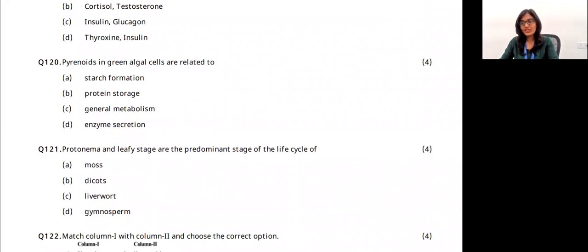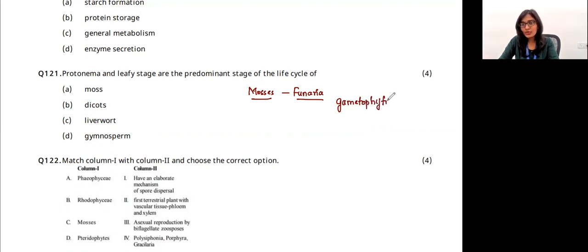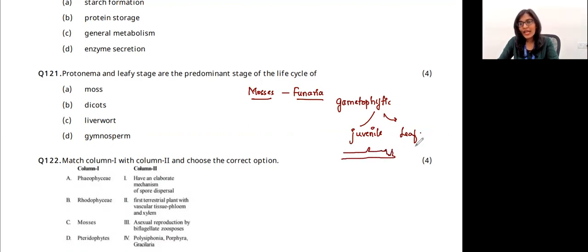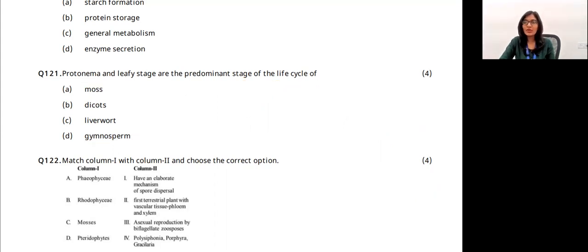Protonema and leafy stage are found in which organisms? In mosses like Funaria, the dominant phase is the gametophytic phase, which has two stages: a juvenile (protonema) stage and a leafy stage. The leafy stage has root-like, leaf-like, and stem-like appearances, but they are not real roots. This predominant gametophytic (haploid) stage is seen only in mosses. In angiosperms, dicots, liverworts, and gymnosperms, the sporophytic stage is dominant. The answer is option A.